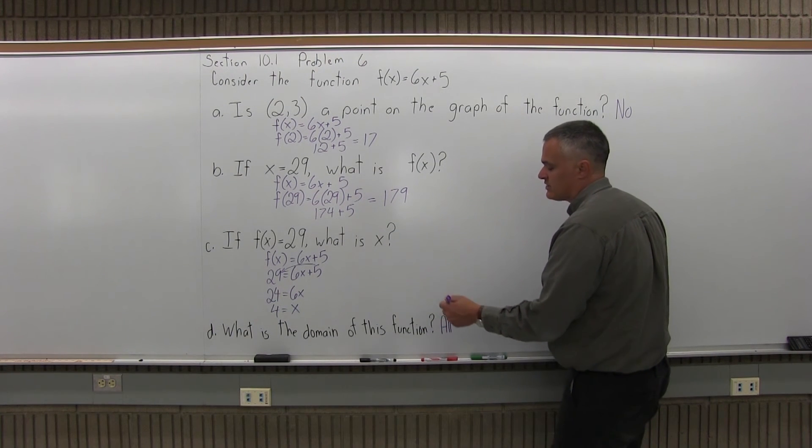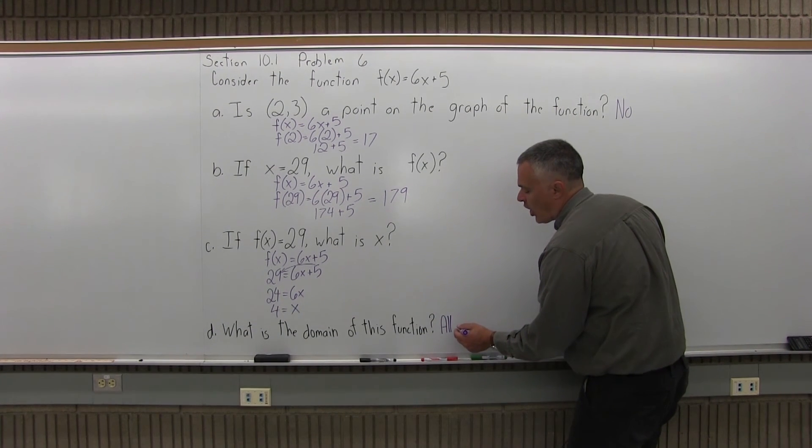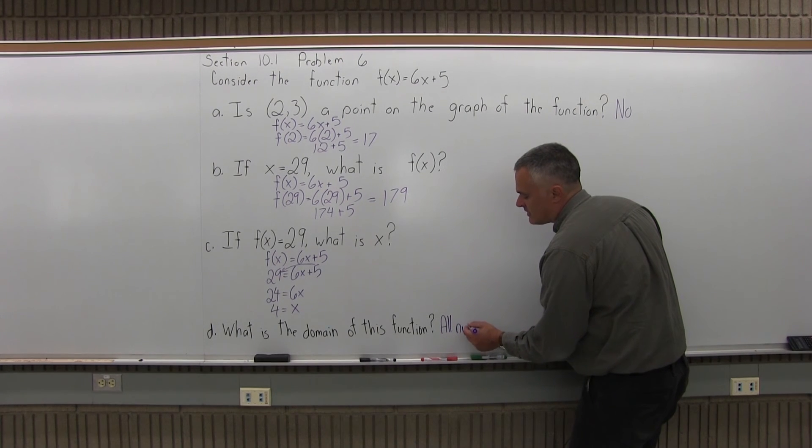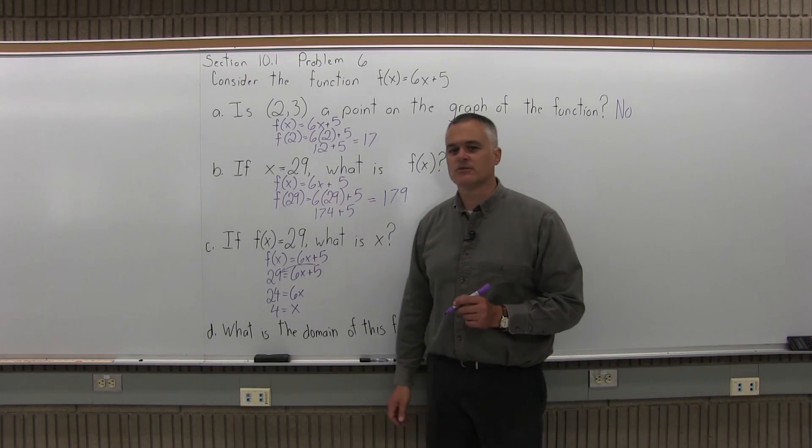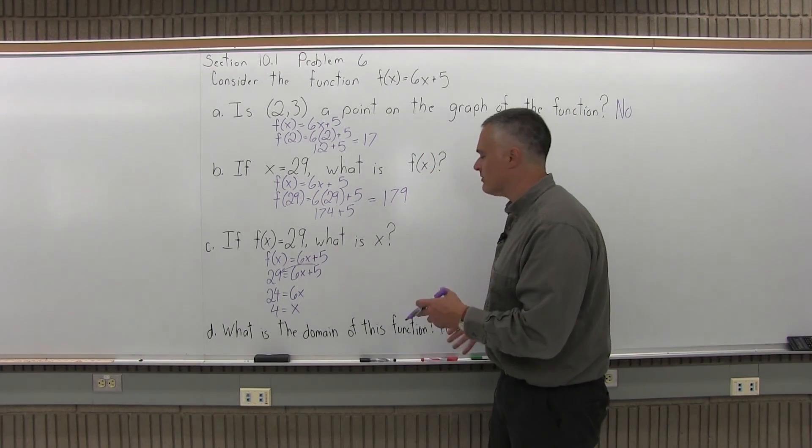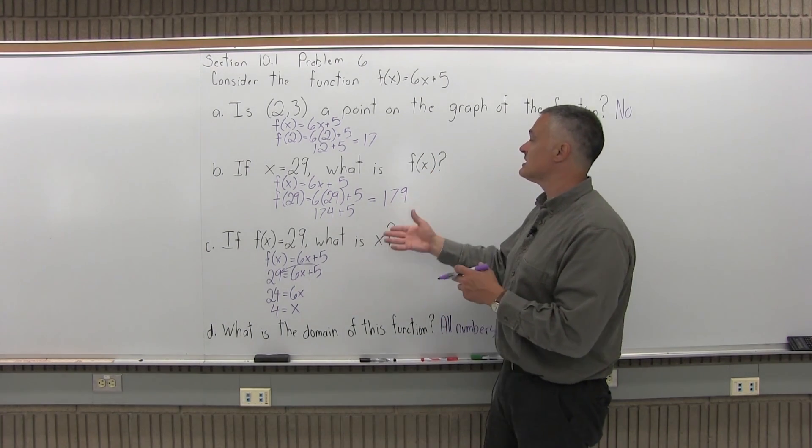So the domain is all numbers. If this was in a book and you'd see the answer in the book in the back, they'd say all real numbers. And you might say, well, what other type of numbers are there? There's also complex numbers, which this class doesn't really get into. So we can just say all numbers. The domain is all numbers. What can you use as an input? You can use all numbers as an input.